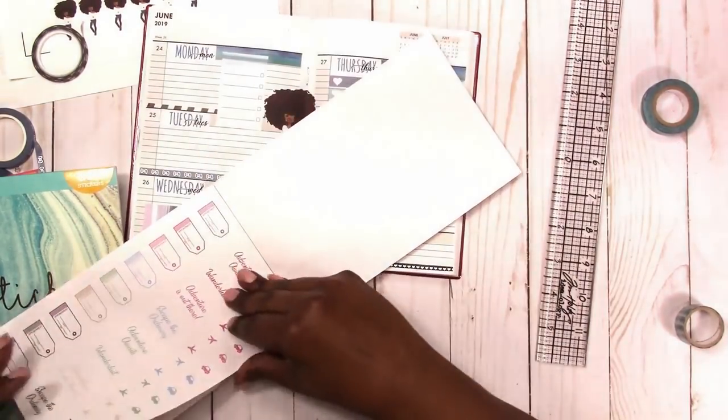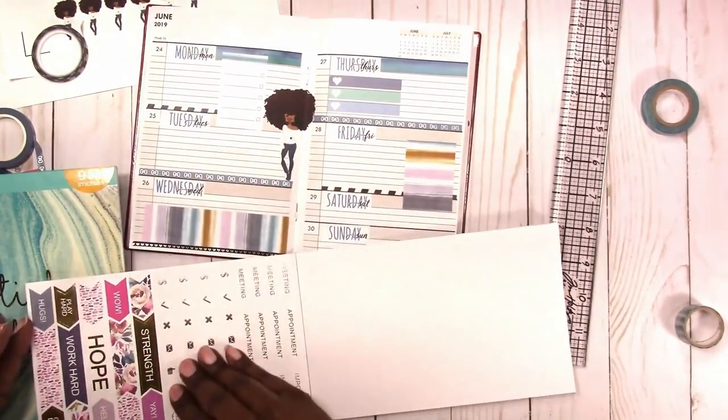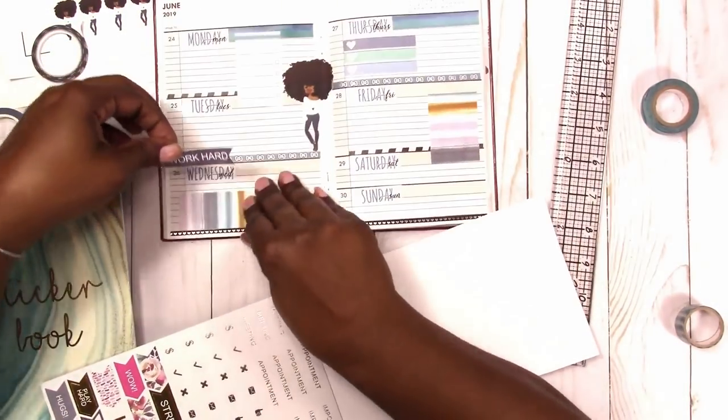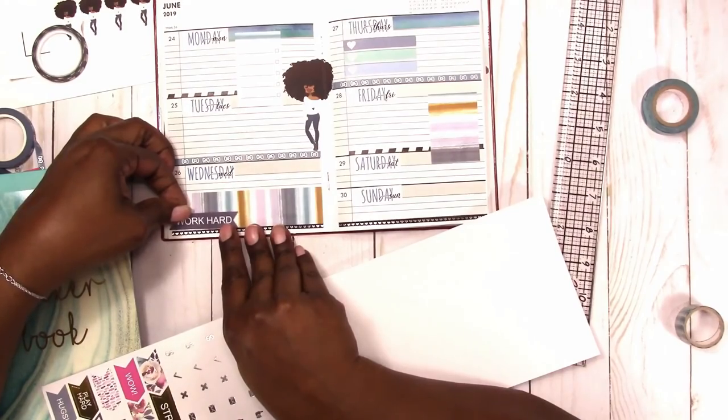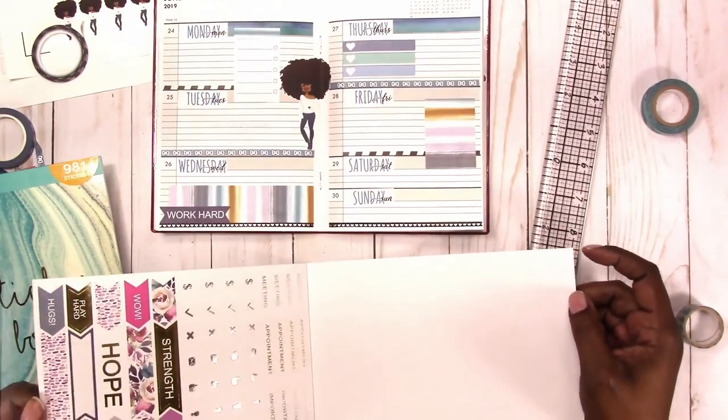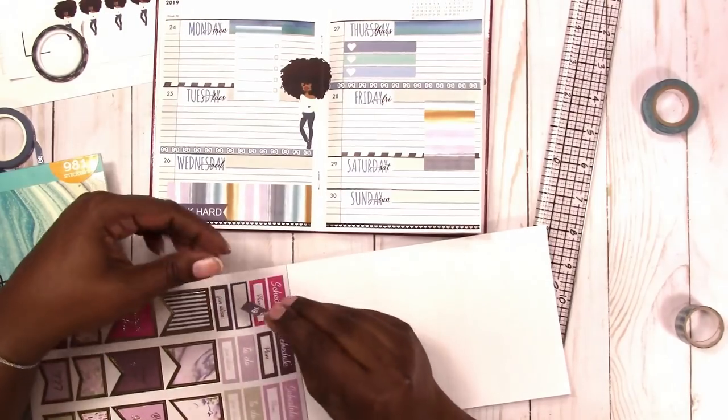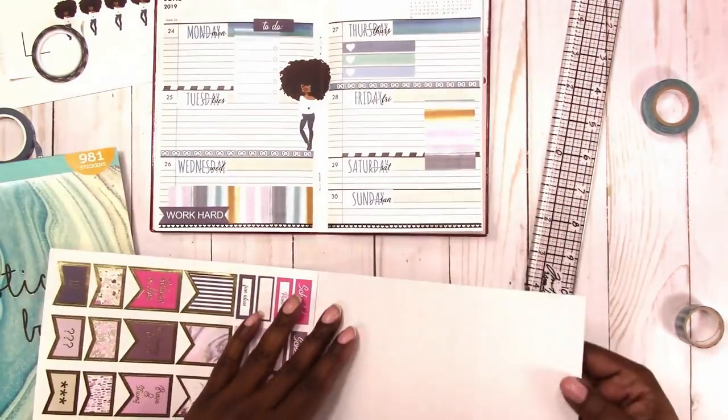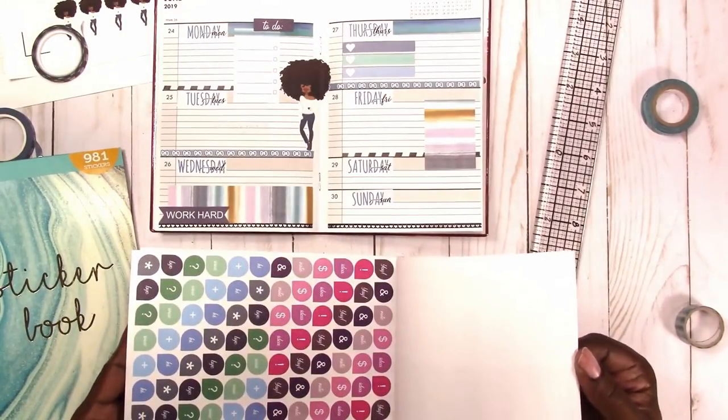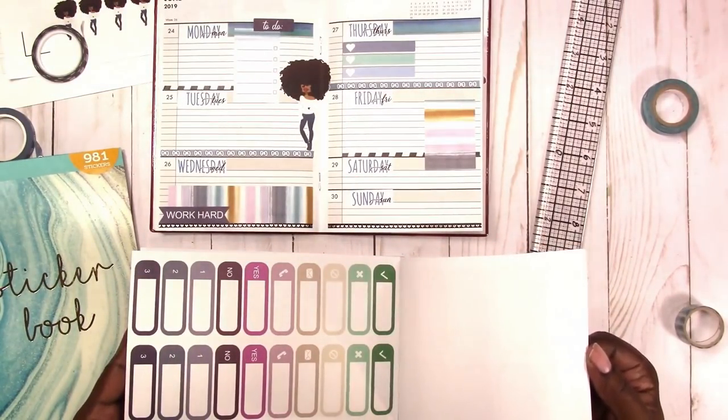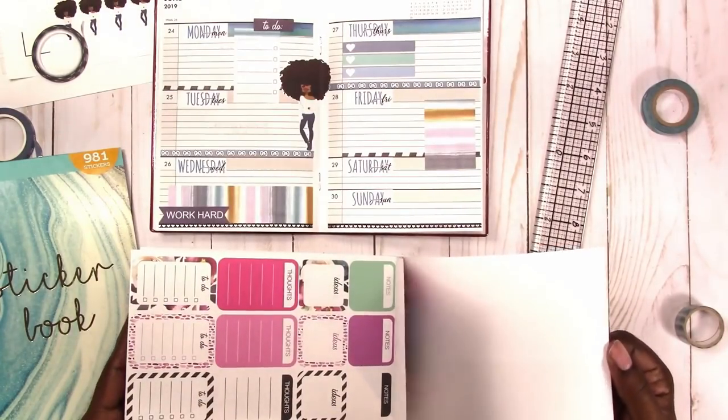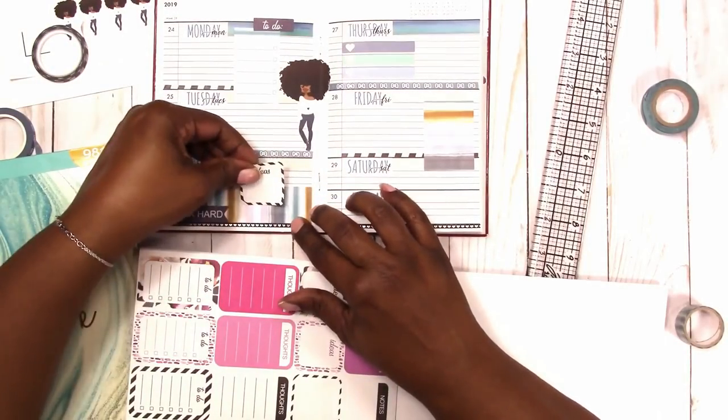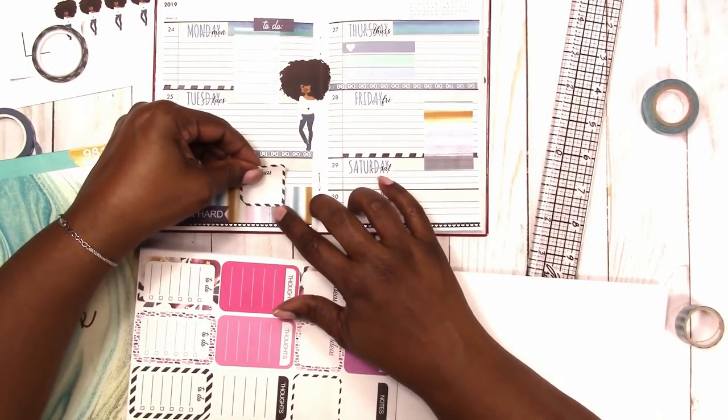And now moving on to a little bit of decor. I'm going to add this work hard sticker to Wednesday. Again doing a little layering. Then I'm going to add this to-do sticker layering over the checklist box on Monday. And here I'm going to use this ideas box to layer on Wednesday. Again, giving me a little more space to write if I need it.